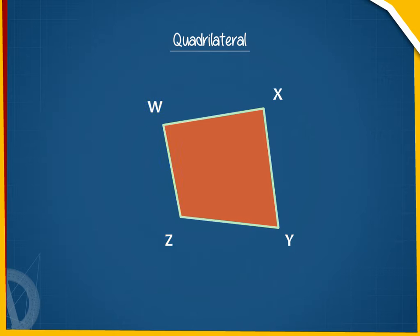And the vertices of the quadrilateral are W, X, Y, and Z. At each of the vertex,